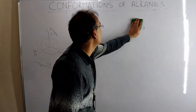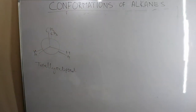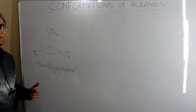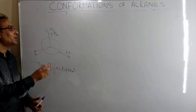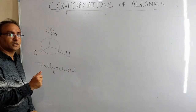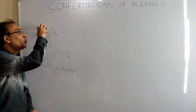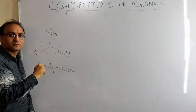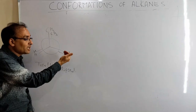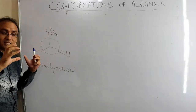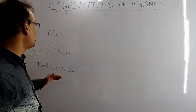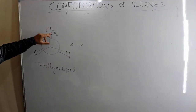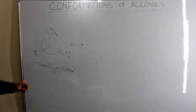Now I never used the term 'totally eclipsed' before for ethane — only 'eclipsed.' We introduce 'totally eclipsed' here for butane because now there are different substituents. Here the most bulky groups — the two CH3 groups — are eclipsing each other, and the least bulky groups — hydrogens — are also eclipsing each other. When substituents of the same size eclipse each other like this, it is called totally eclipsed.